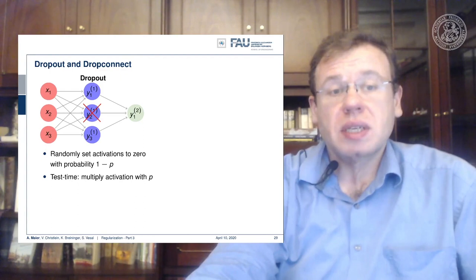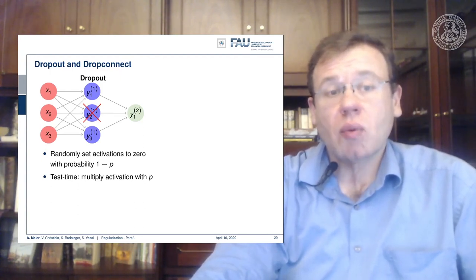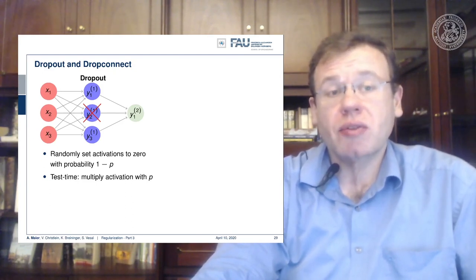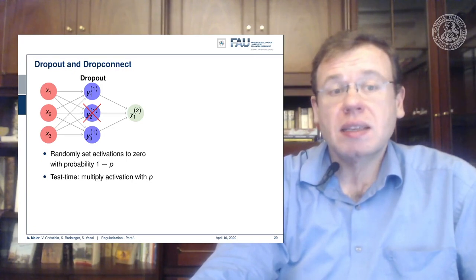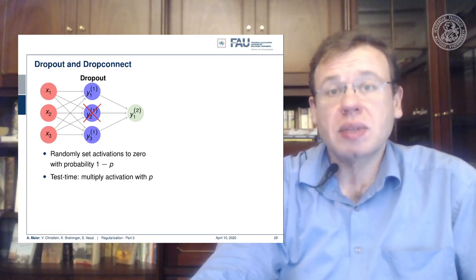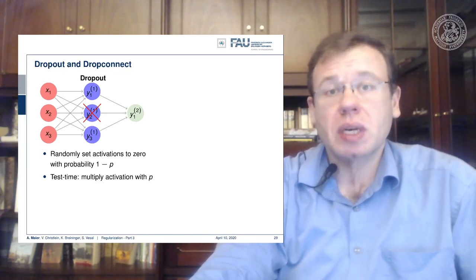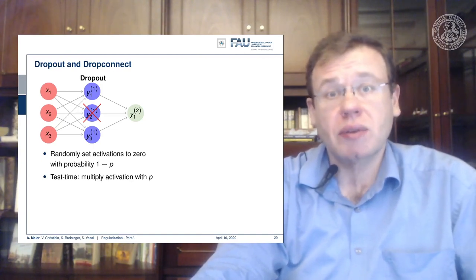An interesting concept here is, of course, that if you use this dropout, let's say y1 and y2 in this example, they would be correlated. So they carry the same information. Now, if I use them and try to train them, they will never learn something else because they always produce the same output. And because they produce the same output in the backpropagation, they will get the same update. So they will always stay correlated.